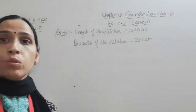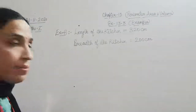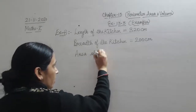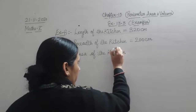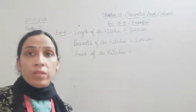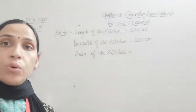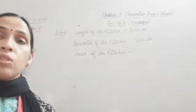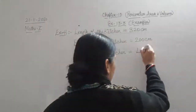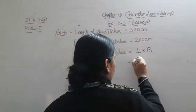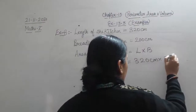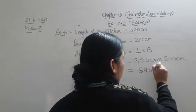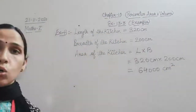First you are supposed to find the area of the kitchen. The formula is length multiplied by breadth: 320 cm × 200 cm = 64,000 cm². This is your area of the kitchen.